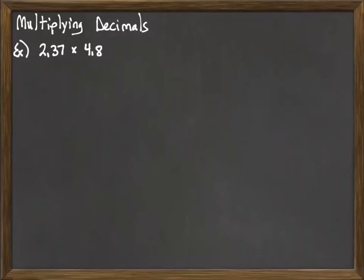In this video we want to review how to multiply decimals. We have the problem here: 2.37, or 2 and 37 hundredths, times 4.8, or 4 and 8 tenths.